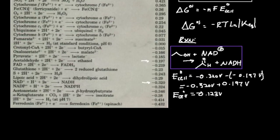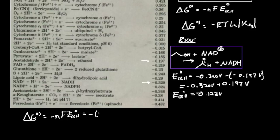Now that I have the cell potential, I can find the standard free energy. The standard free energy is equal to negative N — the number of electrons being transferred — times the Faraday constant, times the standard cell potential. NAD is able to transfer two electrons, and two electrons are being transferred from ethanol making acetaldehyde, so this is a two-electron process.